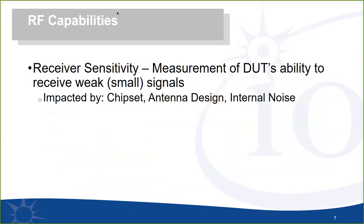Inside the RF capabilities section, one of the key things being measured is receiver sensitivity — essentially how well the device under test can receive small, weak signals. This is fairly common in RF-type test plans. For Wi-Fi testing, this is impacted by the chipset and antenna designs as well as any internal noise that might be present in the devices, and those are the things that could be discovered or improved through the application of this testing.